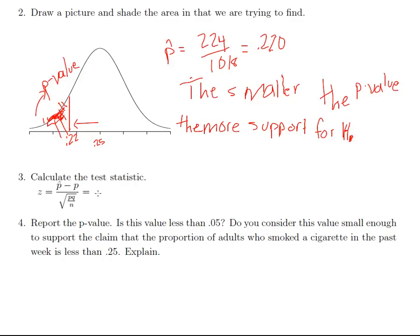Okay, so we have 0.22 minus 0.25, that's what's in our null. And that's going to be divided by the square root of 0.25 times 0.75 divided by 1,018. So that's our z-score. Once I get my z-score, I can just use the normal table to look that up. So this is negative 2.21.